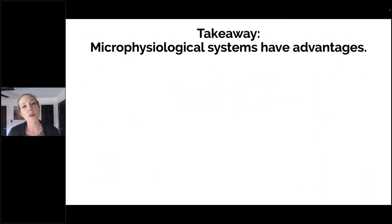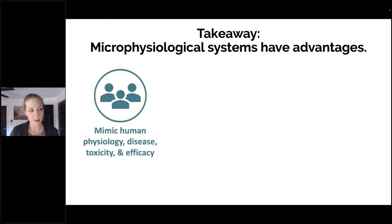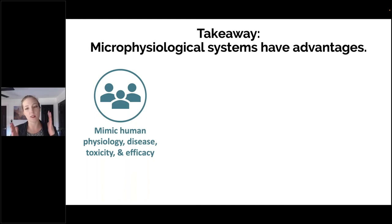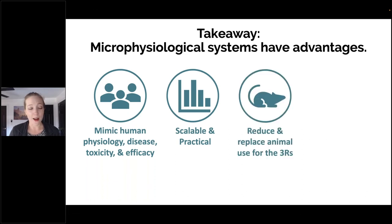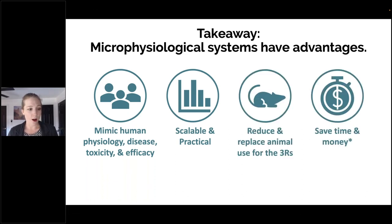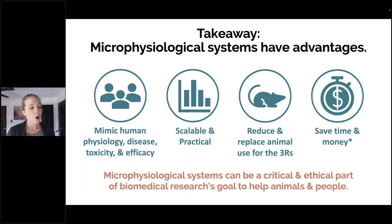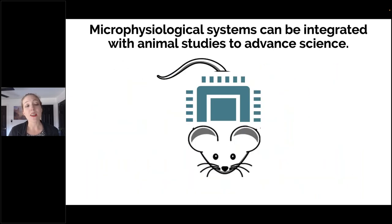Despite those limitations, we truly believe that microphysiological systems have advantages. They mimic human physiology, disease, toxicity, and efficacy — you can also have animal MPS, so you can see what's happening in the animal MPS, the human MPS, and the preclinical animal model side by side. They're scalable, practical, can replace animal use for the 3Rs, and can save time and money. Overall, they can be a critical and ethical part of biomedical research's goal to help both people and animals. They can be integrated with animal studies — it doesn't have to be one or the other.